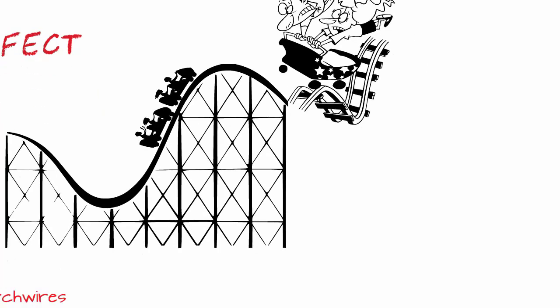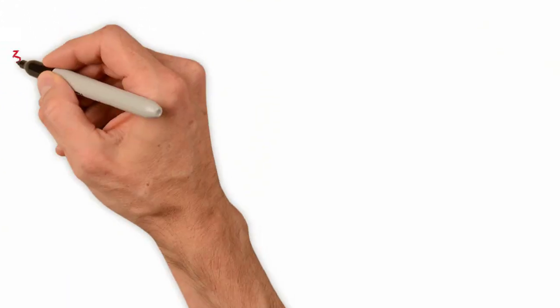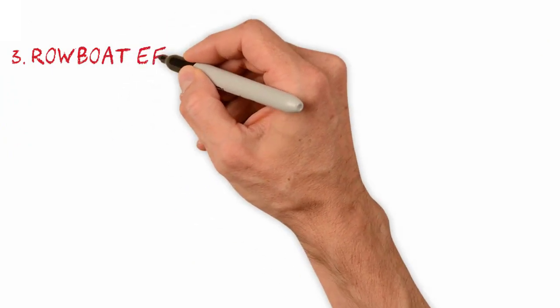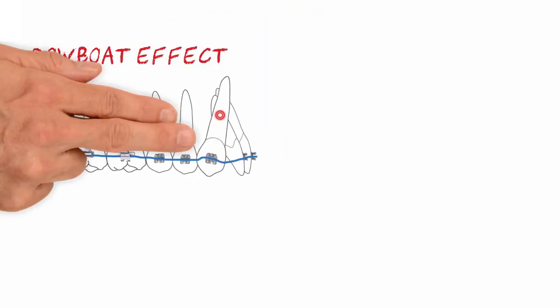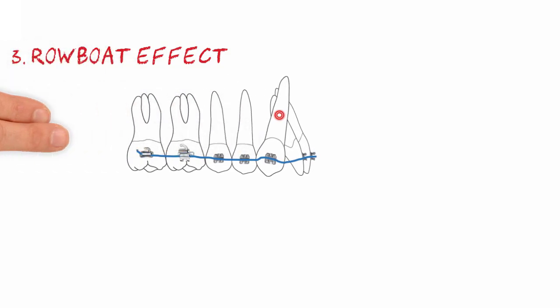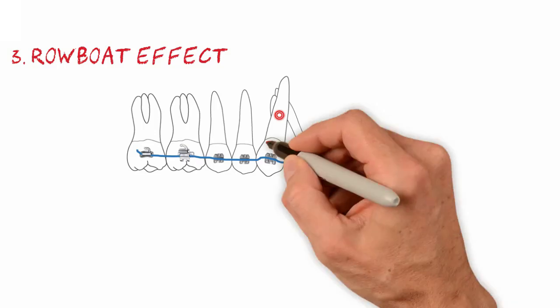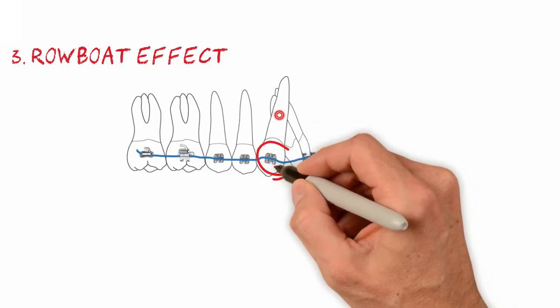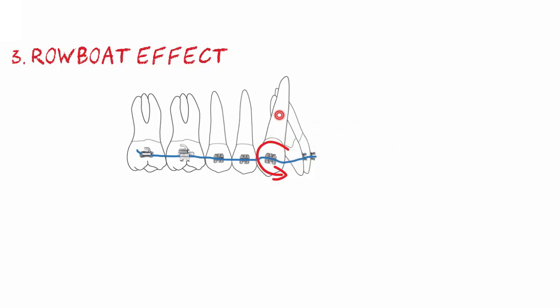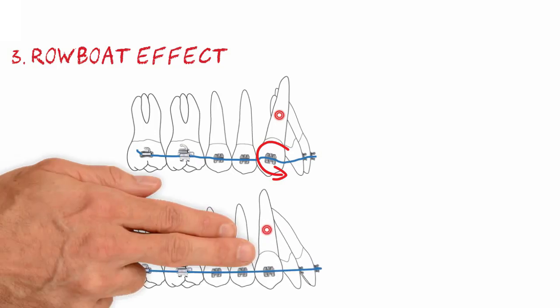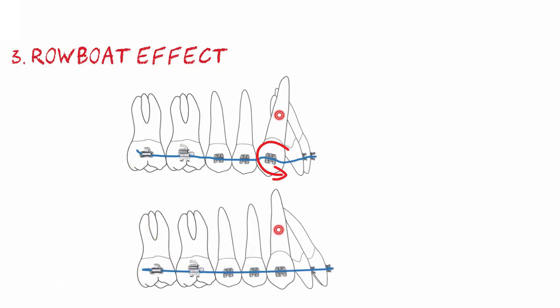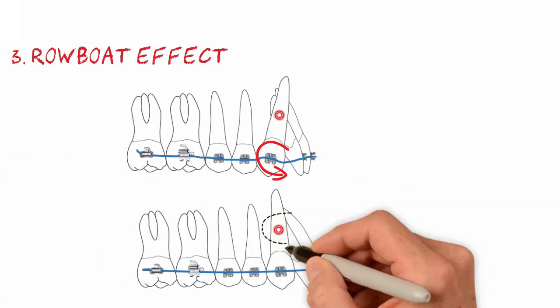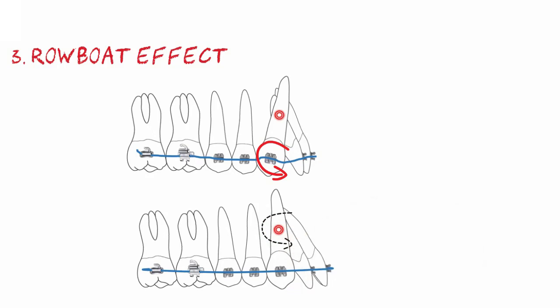Analogy number 3 is the rowing boat effect. It can be tempting, and in fact quite frequent, to install a continuous leveling archwire to correct canines with excessive roof mesial inclination. In this case, a couple applied at the canine bracket will cause the crown to move to the mesial, which may pull the entire dentition forward.